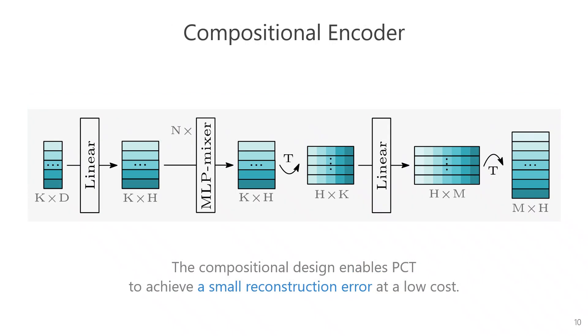Here is the structure of our compositional encoder. First, the position of each body joint is fed to a linear projection layer to increase the feature dimension. Then, the features are fed to a series of MLP mixer blocks to deeply fuse the features of different joints. Finally, we extract M token features by applying a linear projection to the features across all the joints. Utilizing M compositional features to represent a pose enables PCT to achieve a significantly small reconstruction error at a low computational cost.